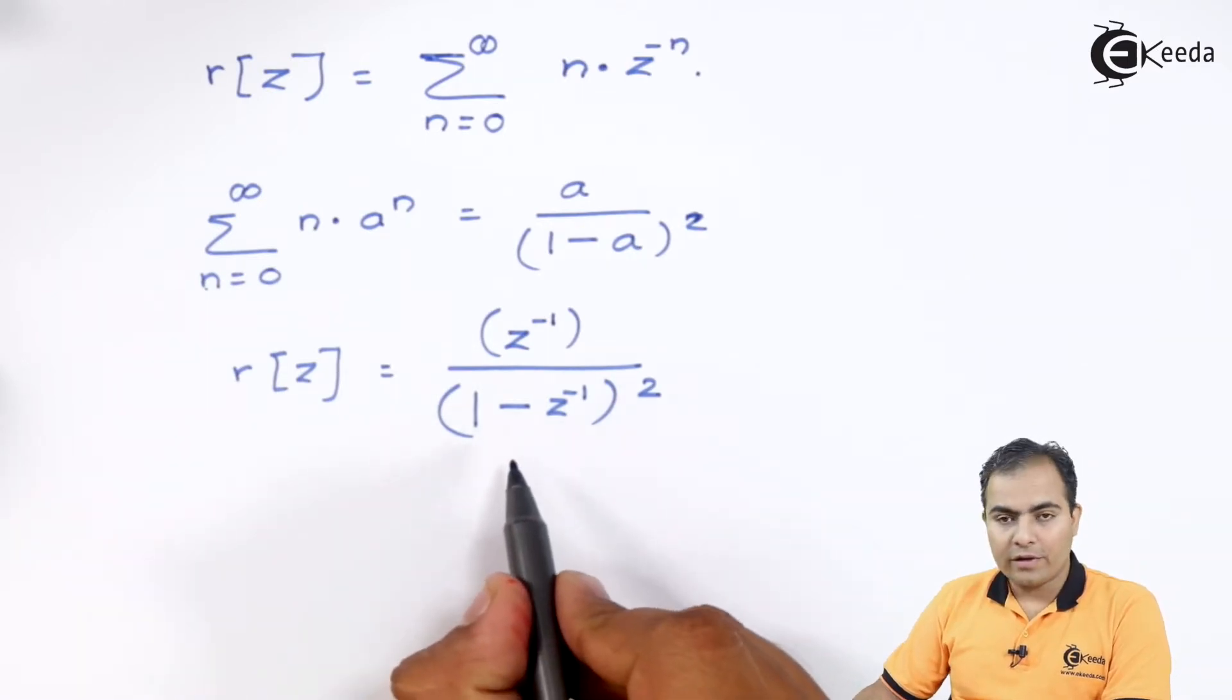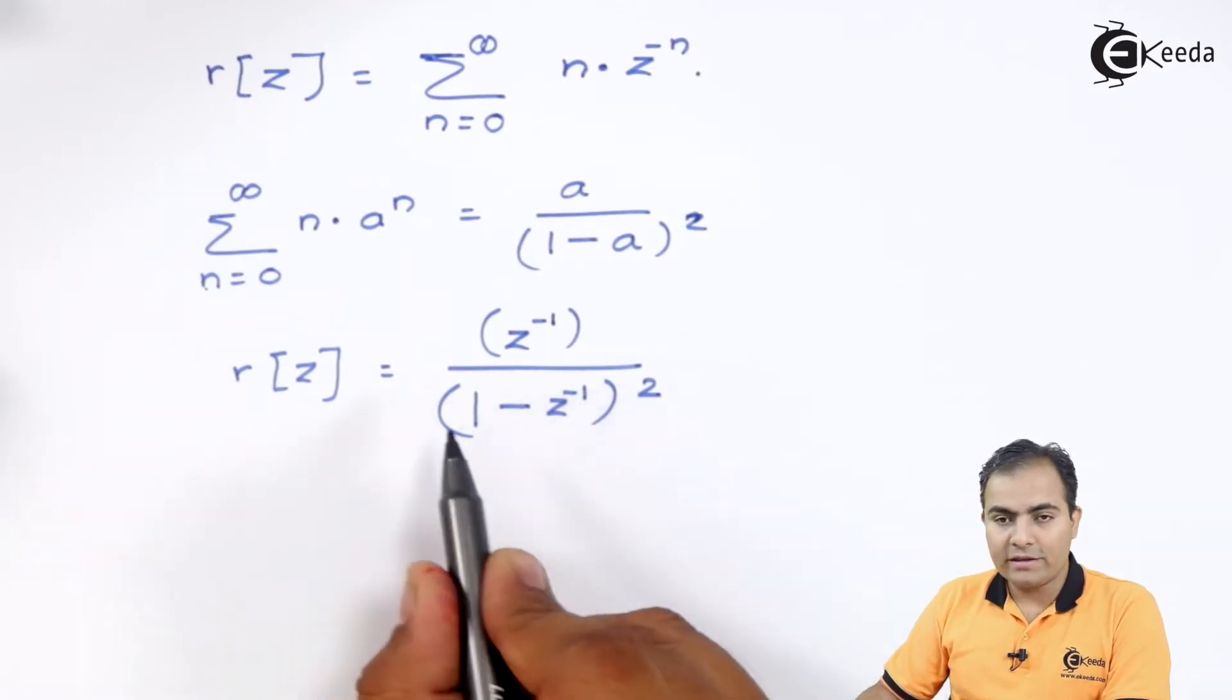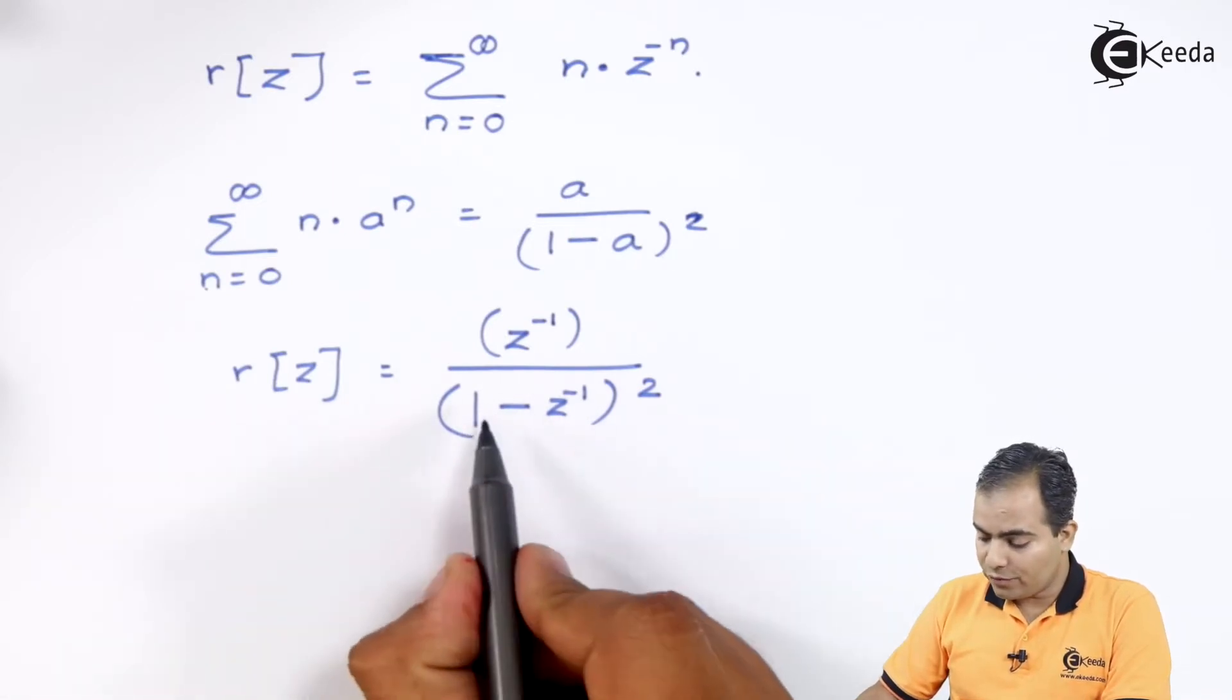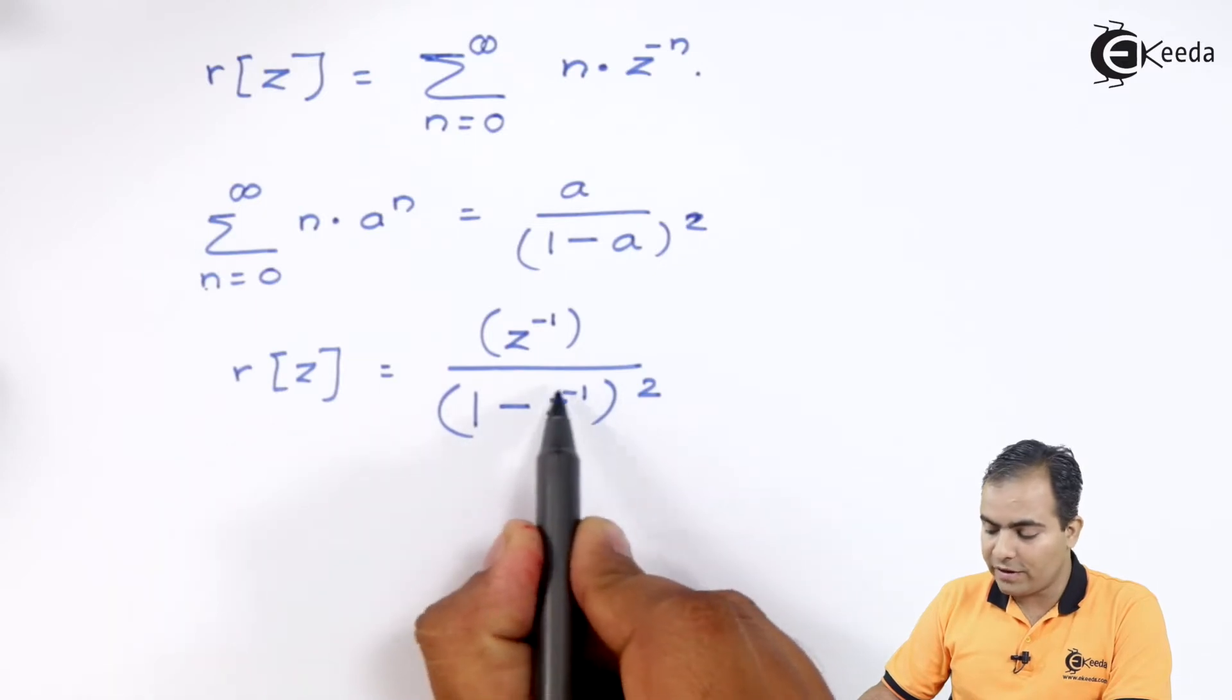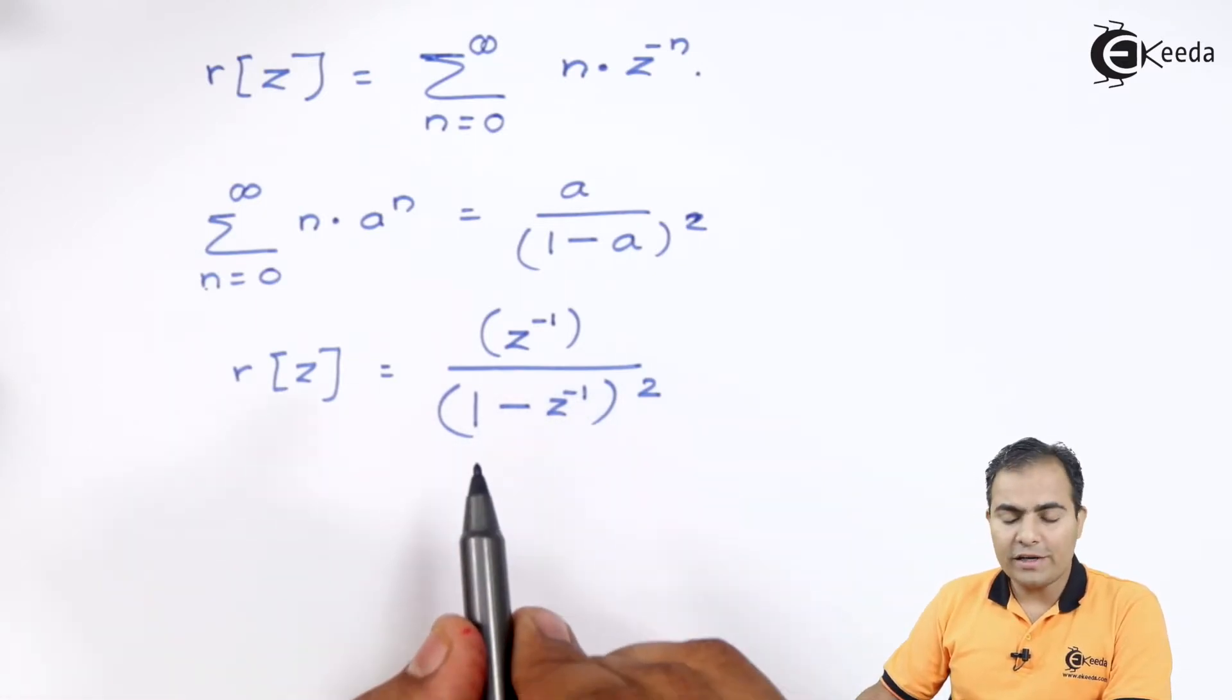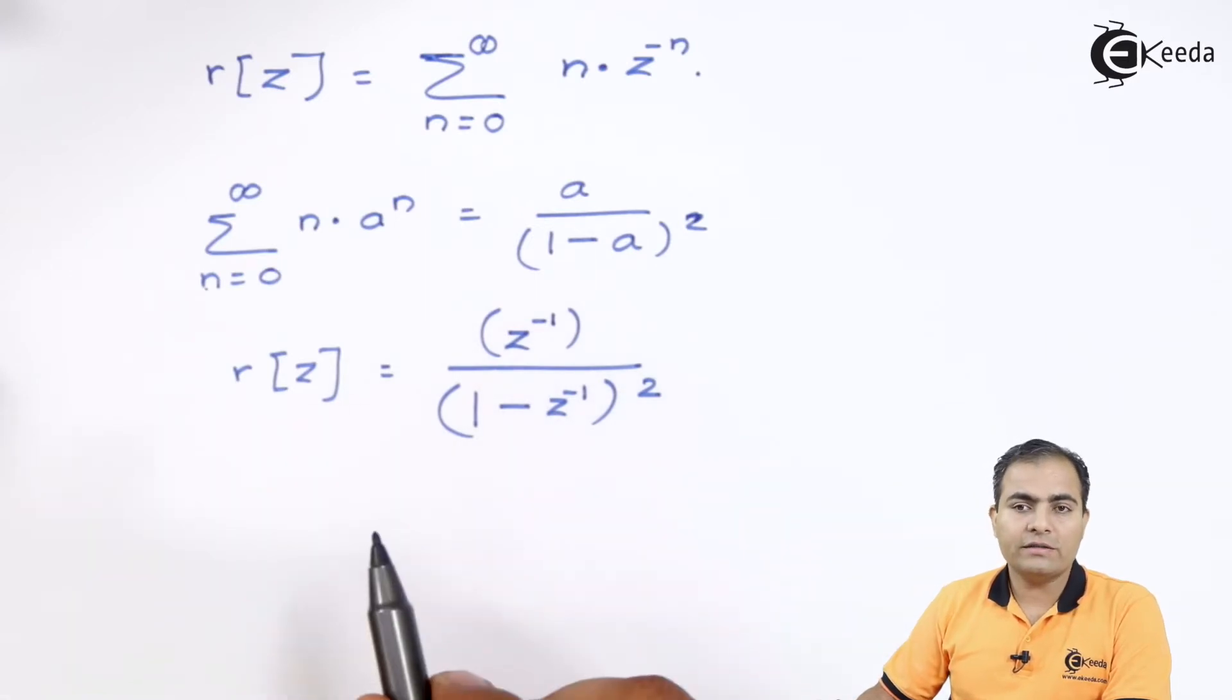Now, what we want? We want to calculate the value like z minus 1. I want z over here and here we have, we want coefficient. So, which term you are going to multiply a numerator and denominator to get this result?